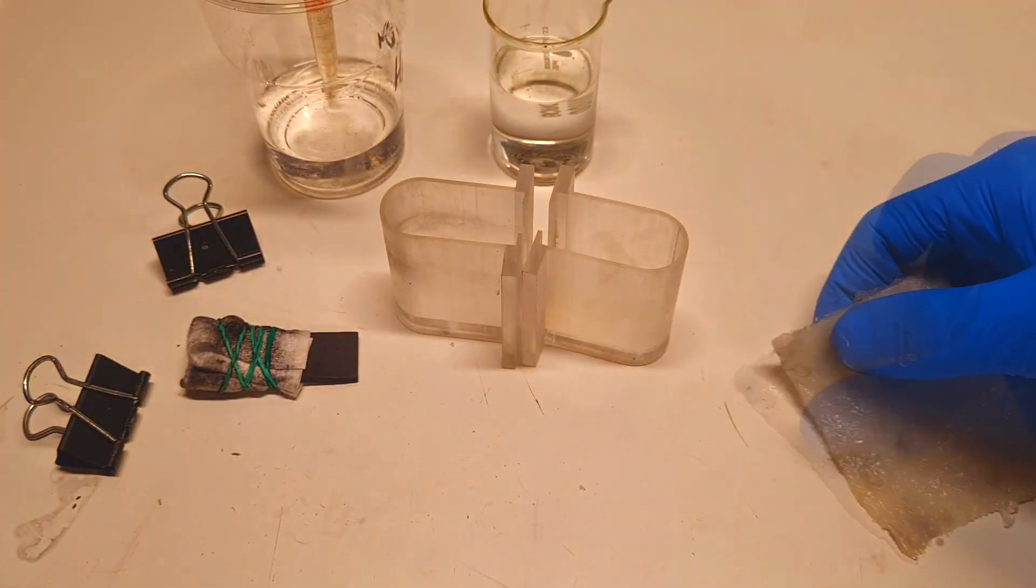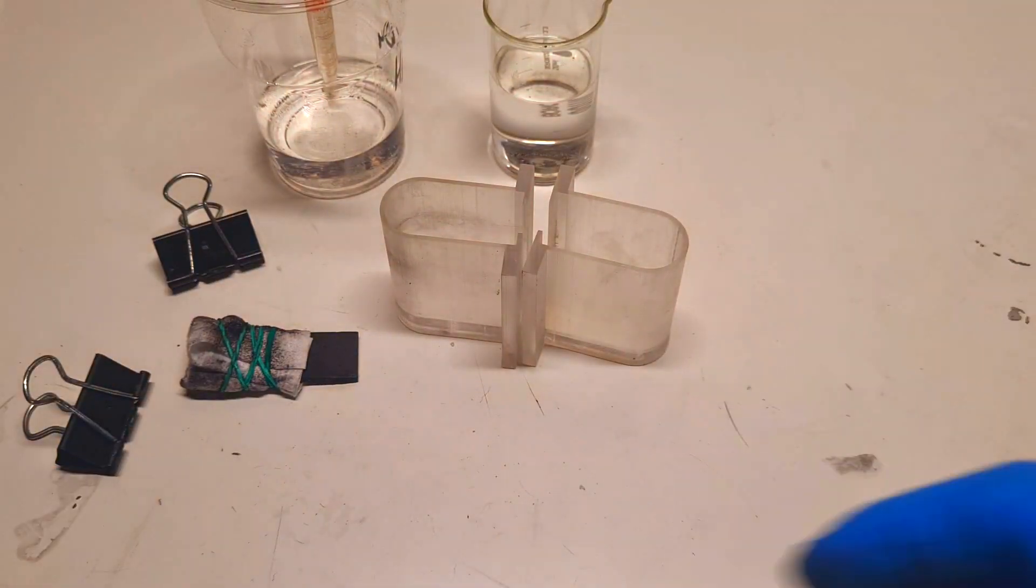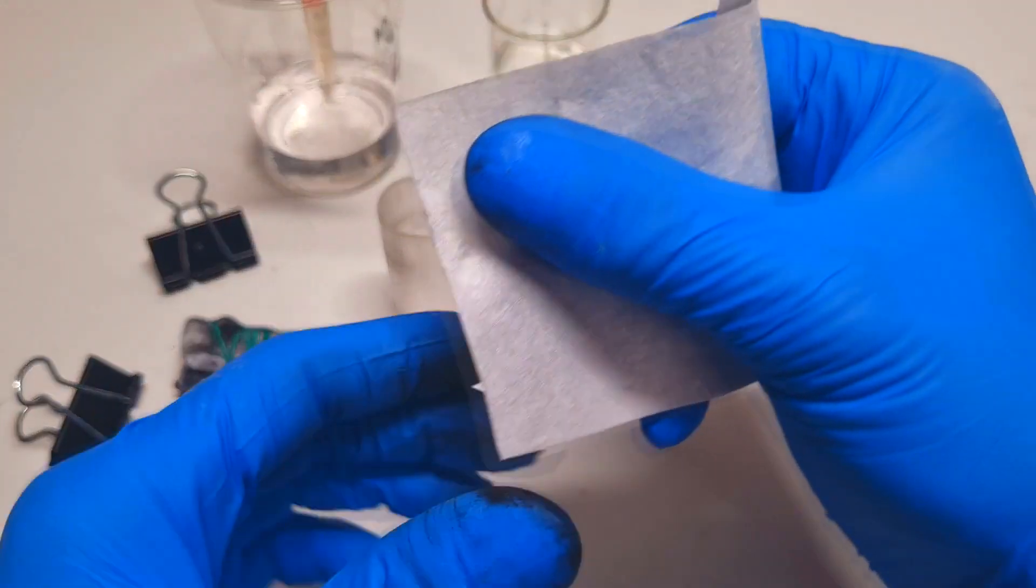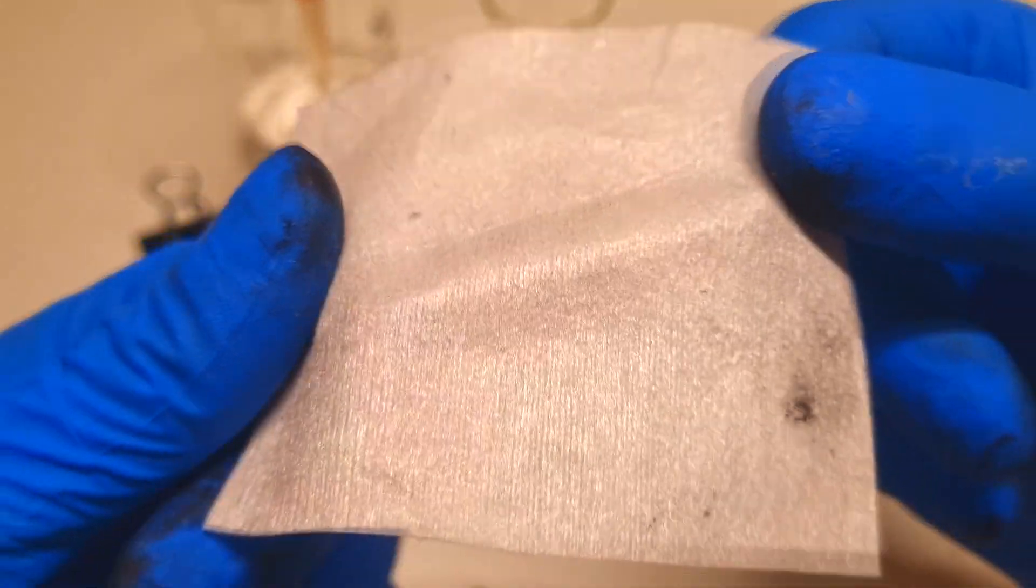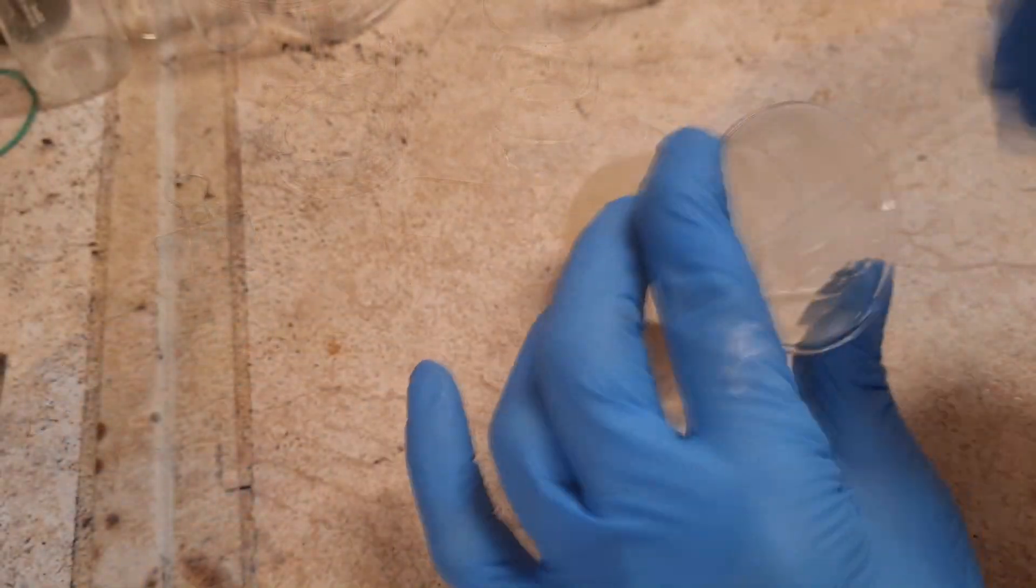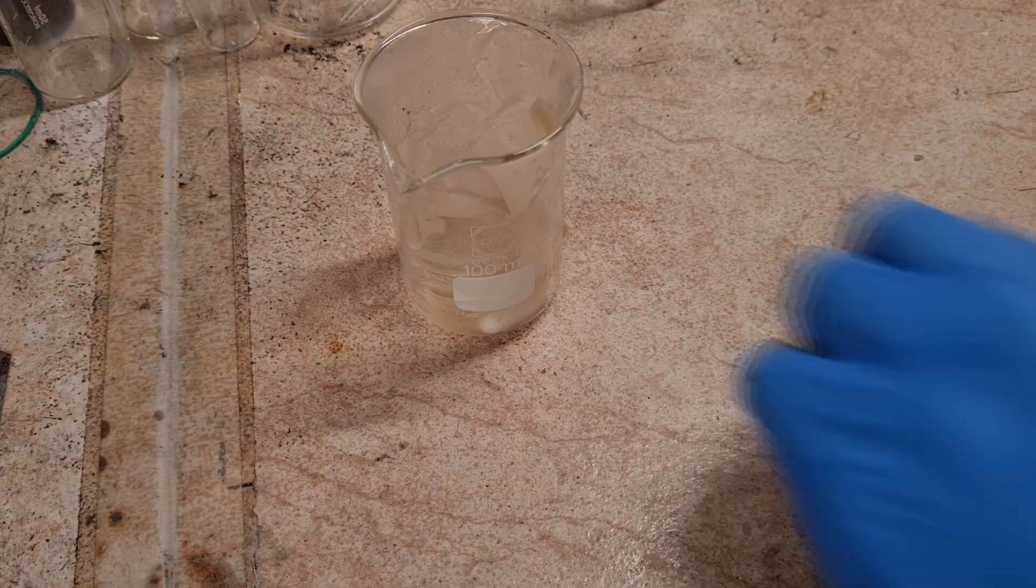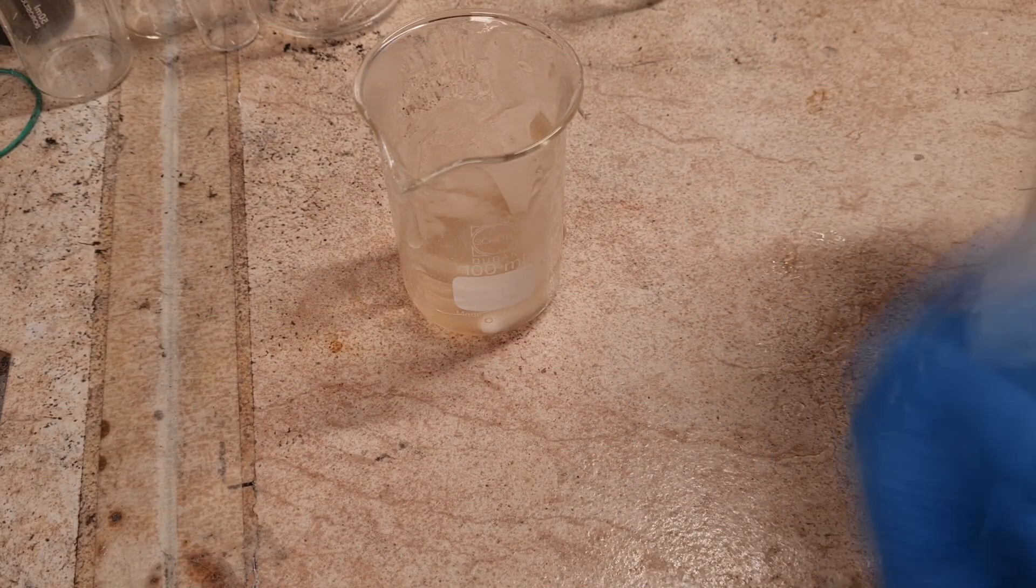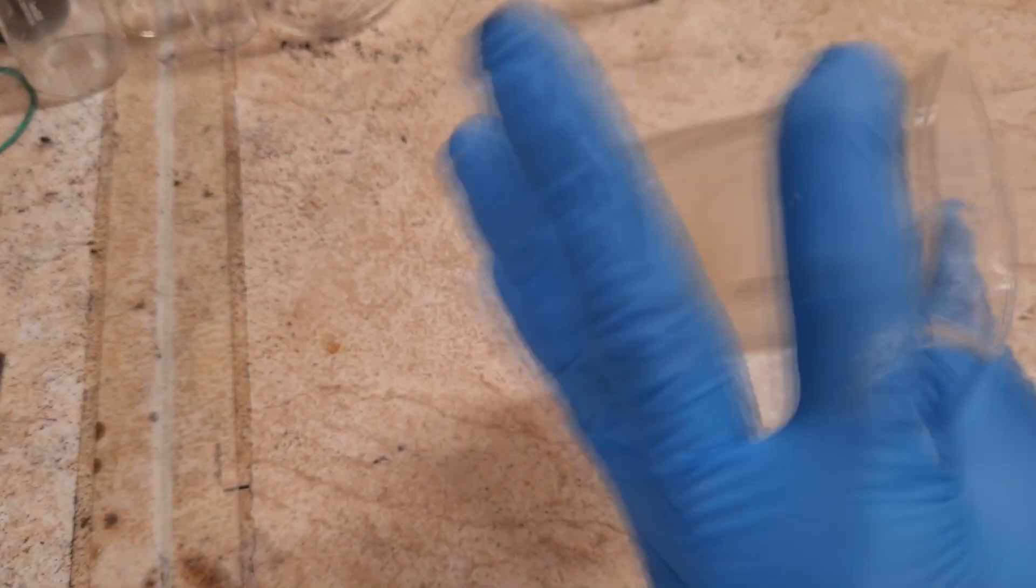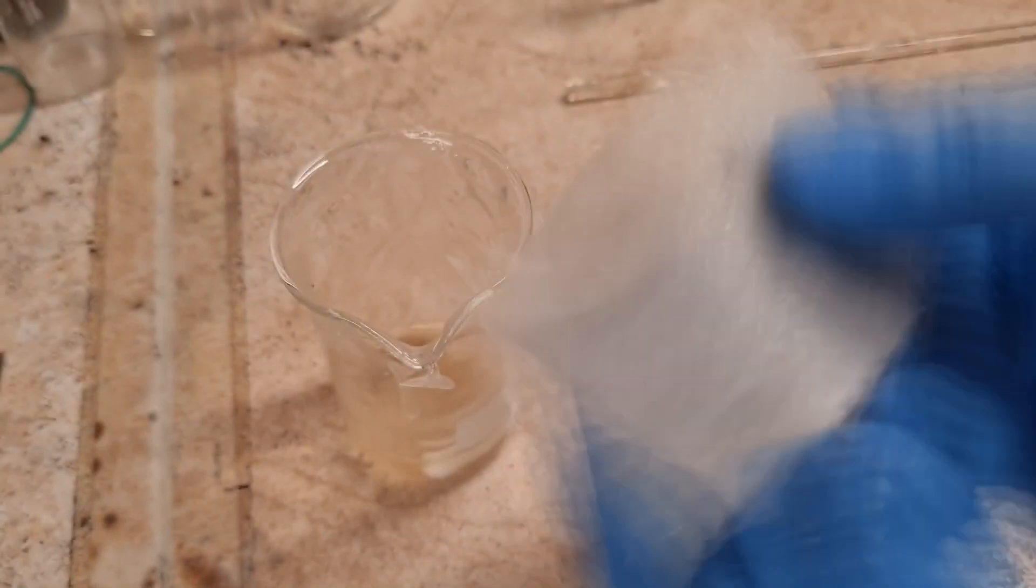You see, because the agar gel I impregnate into this bamboo fiber cloth. And this way I get way more stronger membrane. So this kind of membrane will not crack so easily.